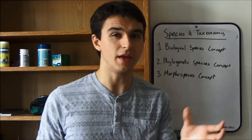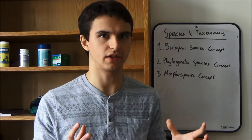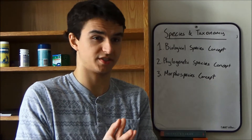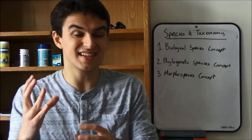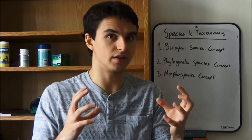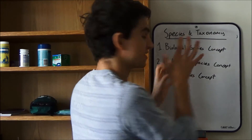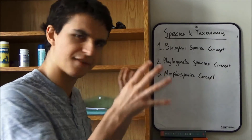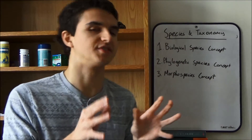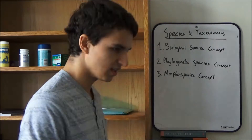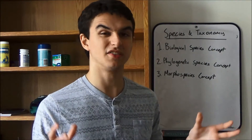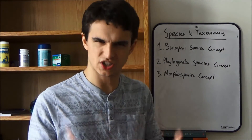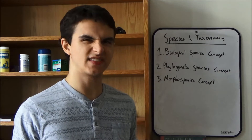Also, there may be two morphs which are the same species under the biological species concept but genetically different enough to be classified as different species on a phylogenetic tree. So under the phylogenetic species concept, they'd be different species — and this may result in doubling the amount of species that we actually have.